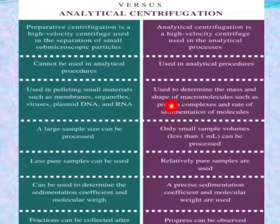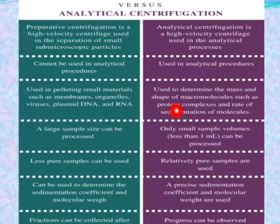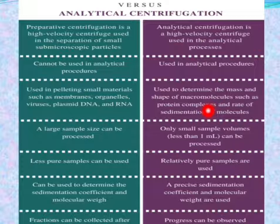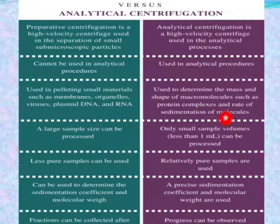Whereas in analytical centrifugation, it is used to obtain information about the types of molecules of a particular sample by knowing the overall shape, conformational changes, and stoichiometry of the subunits. It can also be used to determine the sedimentation rate of the particles.